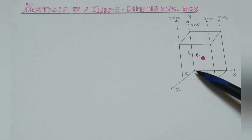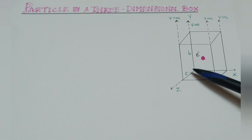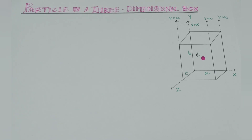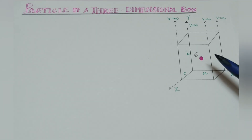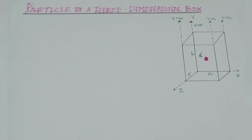That is the length of the potential box. The height of the potential walls is V equal to infinity — infinite height on all walls. The potential energy inside the potential box is V equal to 0. Why? Because the electron moves in a constant potential energy, and constant potential energy means V equals 0.